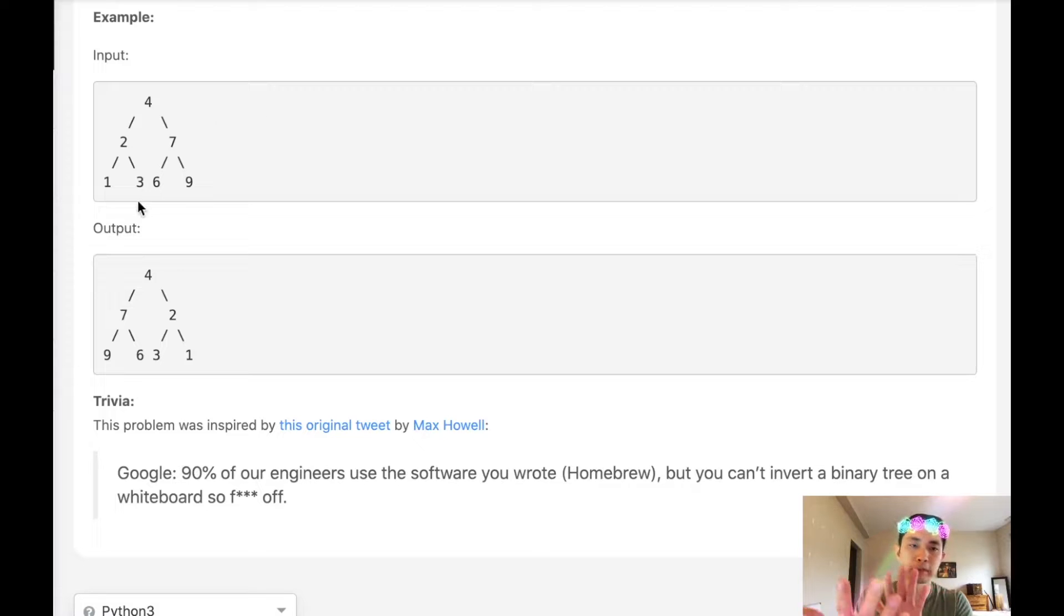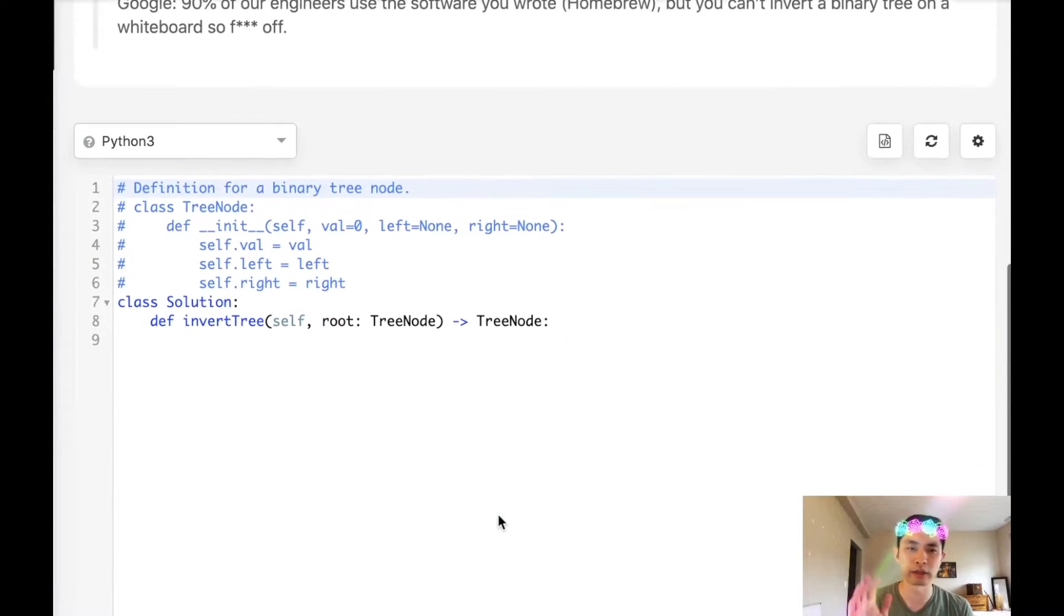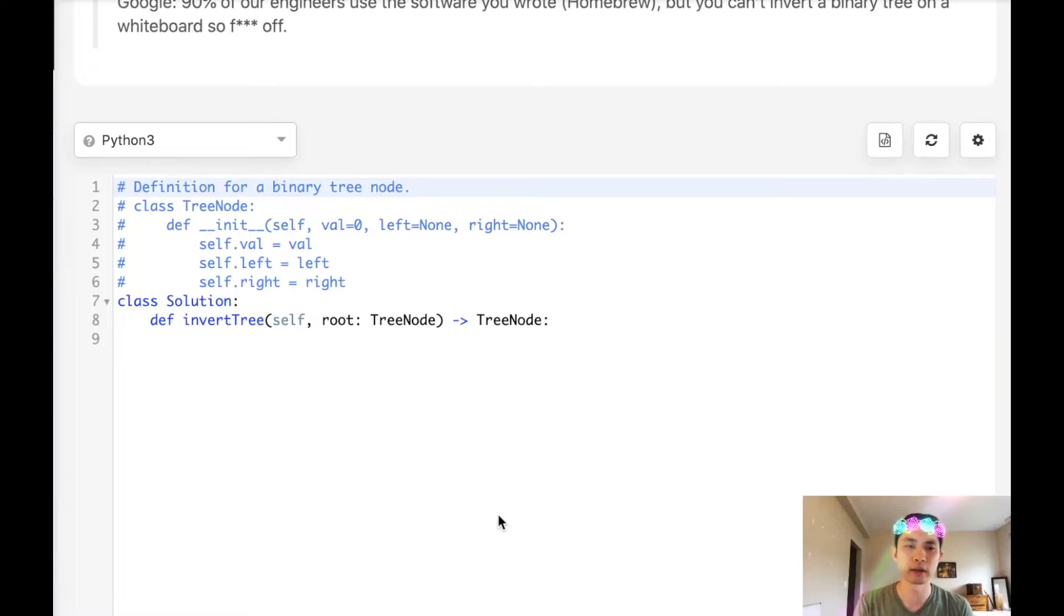So basically we just kind of flipped the binary tree to its opposite end, kind of mirroring it, and now it's sorted in the other way. So at first this is kind of an intimidating problem but it's actually a lot simpler than you think. Let's go to the whiteboard and I'll show you the intuition behind our solution.